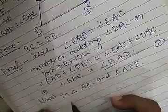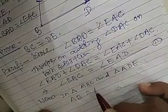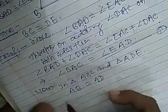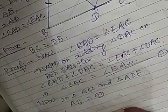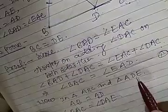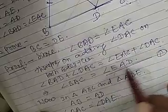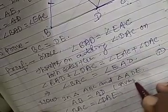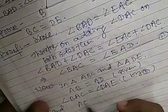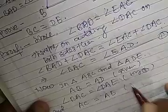In triangle ABC and triangle ADE, angle BAC is equal to angle DAE. AC is equal to AE, this is also given.